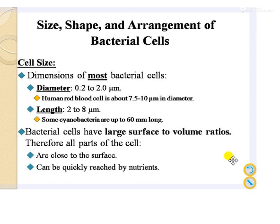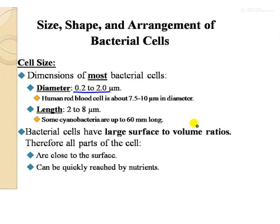The length of bacteria is two to eight microns, and some cyanobacteria are up to 60 millimeters long. The diameter of bacteria is 0.2 to 2 microns. The smallest known bacteria has a size of 0.2 microns. This is why HEPA filters must have a pore diameter of 0.2 microns or less — so that even the smallest known bacteria can be filtered out.